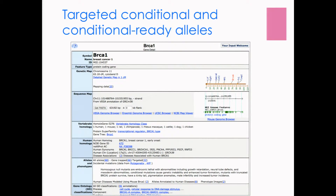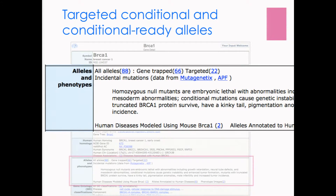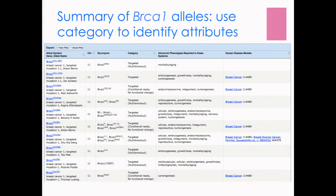Targeted conditional and conditional ready alleles can be found on gene detail pages in MGI in the alleles and phenotypes row. Zooming in, you can see that for BRCA1 there are 88 different alleles that have been described, and if you click on that, you'll go to a summary of the various BRCA1 alleles, where you can use the category column to identify the allele attributes.